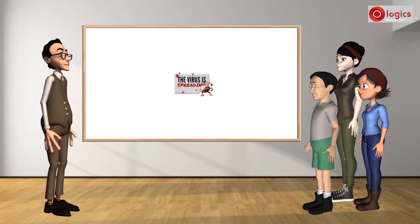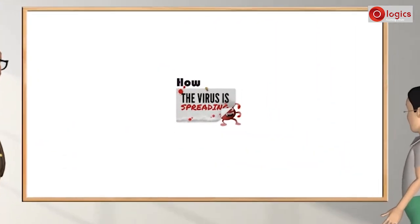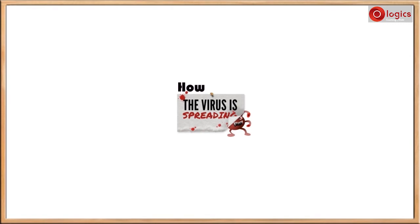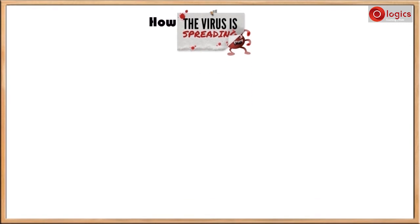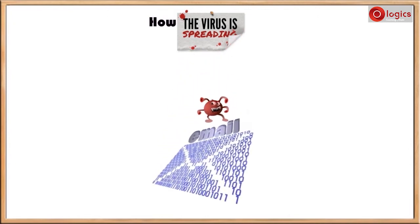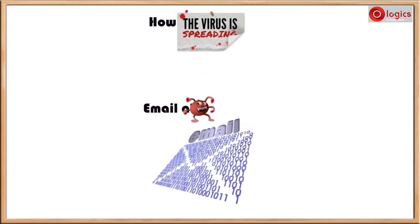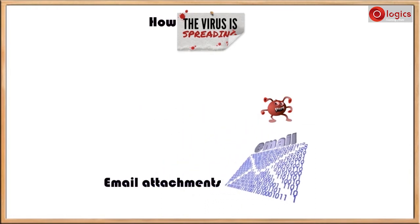We're going to understand how the virus is spreading. The main source of virus spreading is the internet. The virus can easily spread through email attachments. The infected file can be attached or sent to your email, and when you open that email attachment, the virus spreads inside your computer.